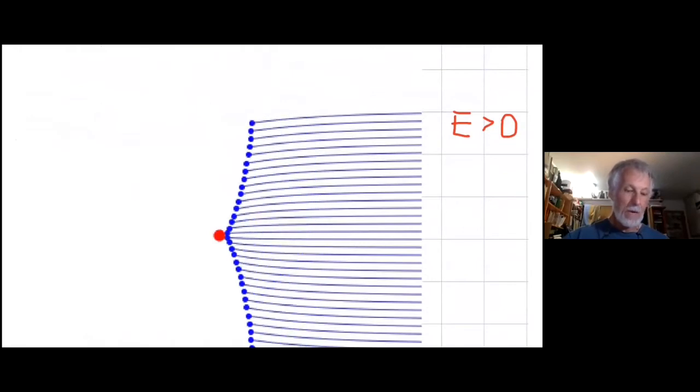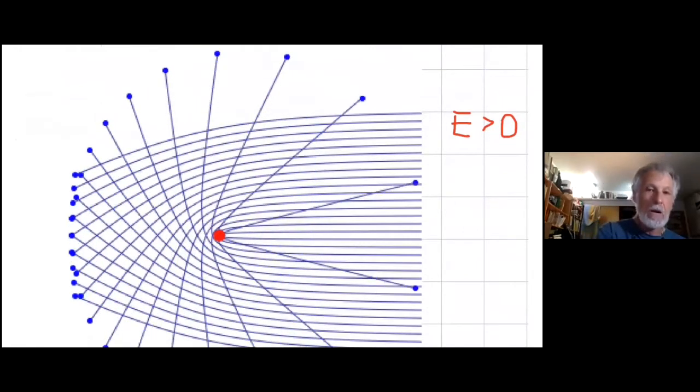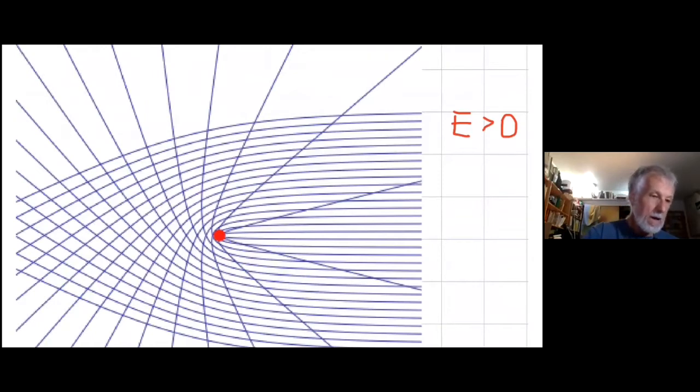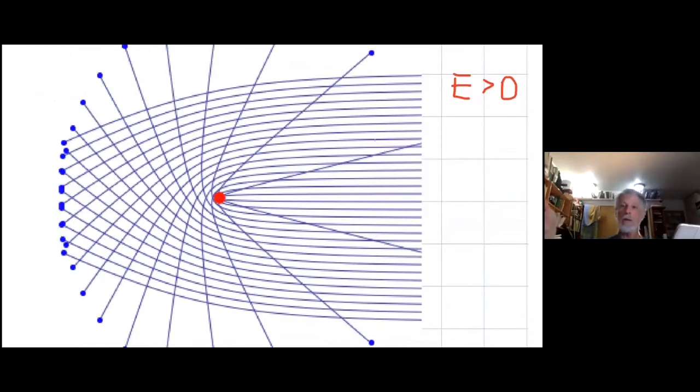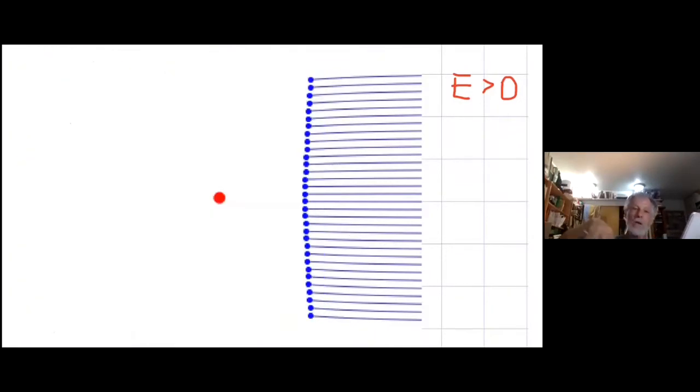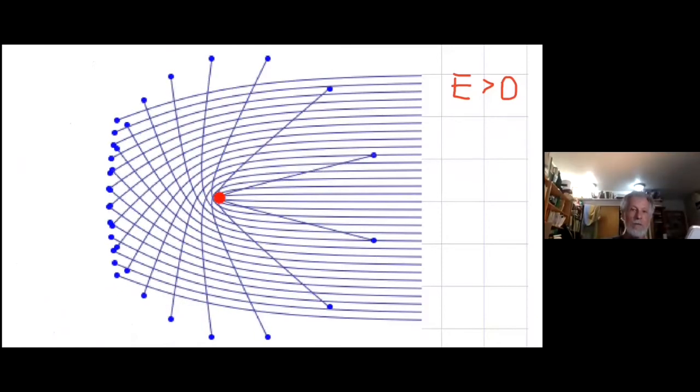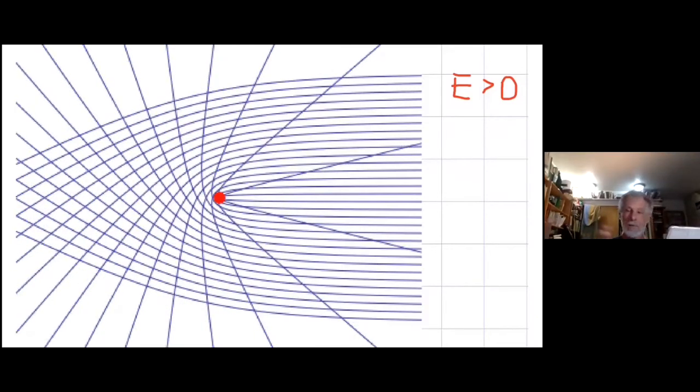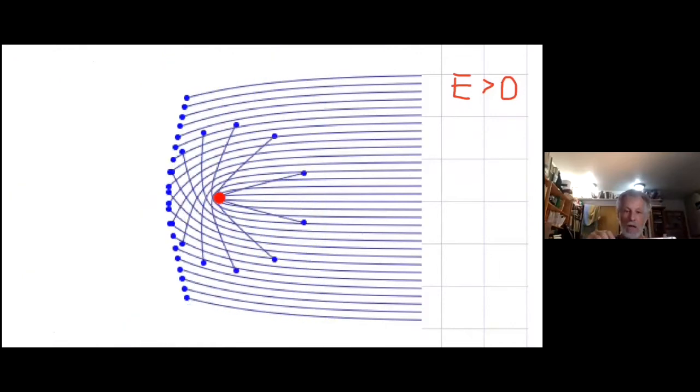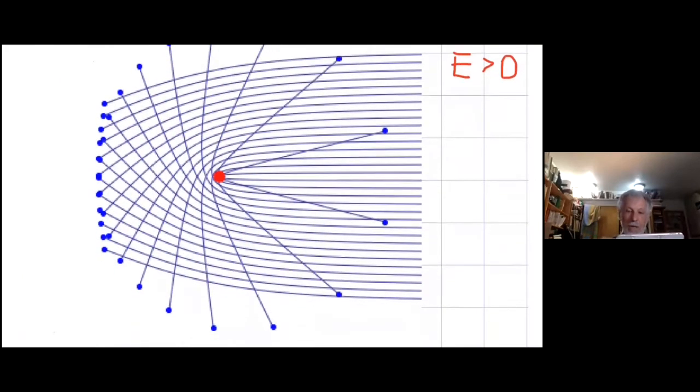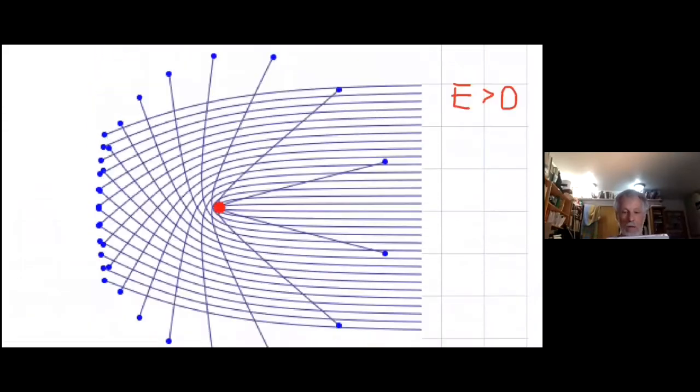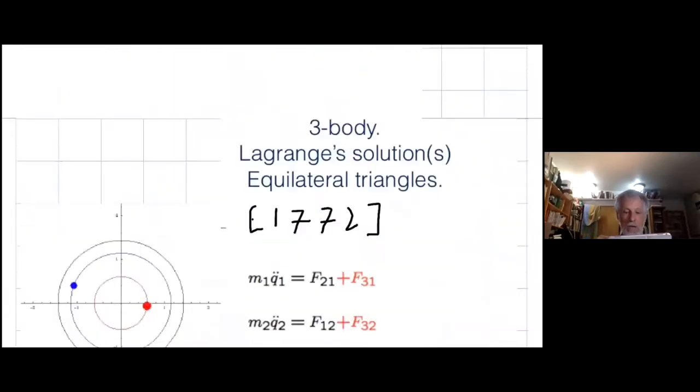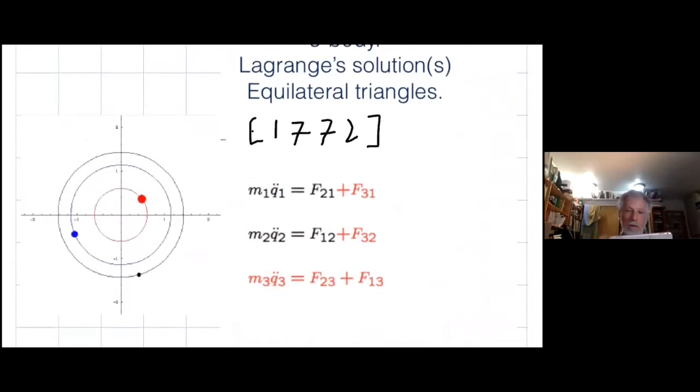The first exoplanets discovered were hot Jupiters. These are Jupiter-sized planets very close to the sun. The sun's going around in the opposite way. And what we see from our telescopes on Earth is the sun's velocity. You can measure that with frequency shift, the red and blue shift. That's called the radial velocity dispersion. That's how exoplanets were first discovered about 20-odd years ago by some Swiss astronomers.